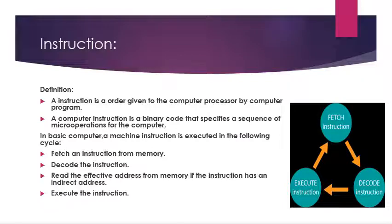In basic computer, a machine instruction is executed in the following cycle: fetch an instruction from memory, decode the instruction, read the effective address from memory if the instruction has an indirect address, then execute the instruction.